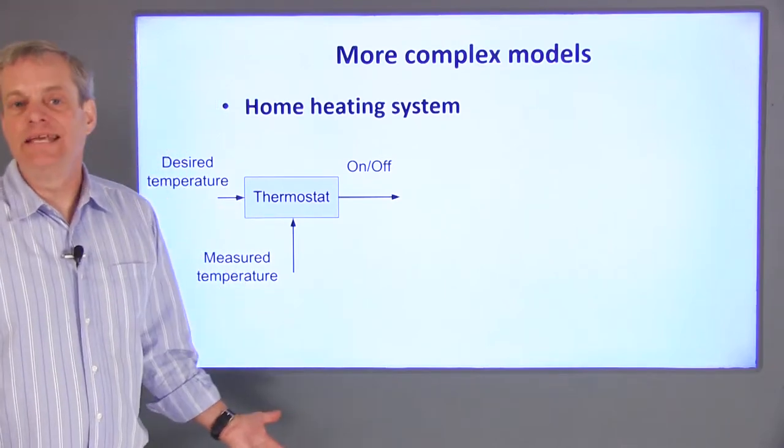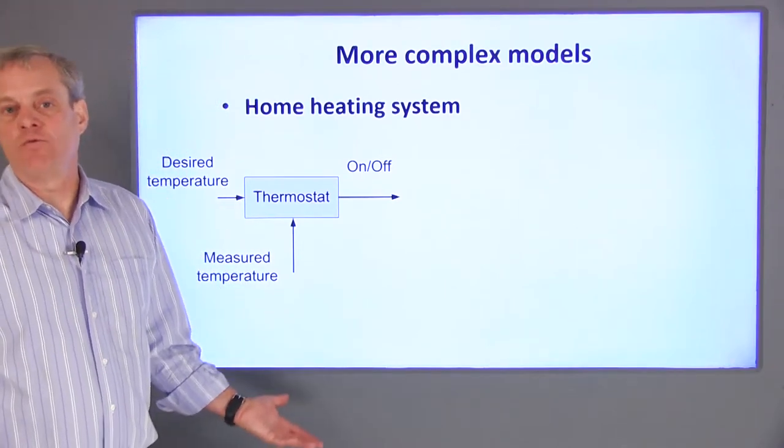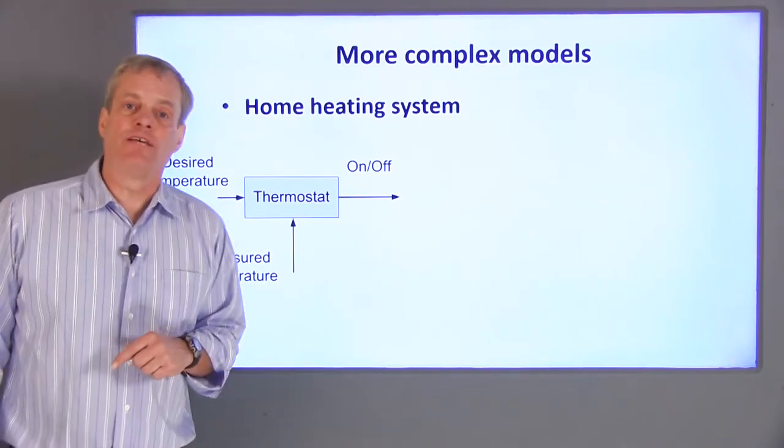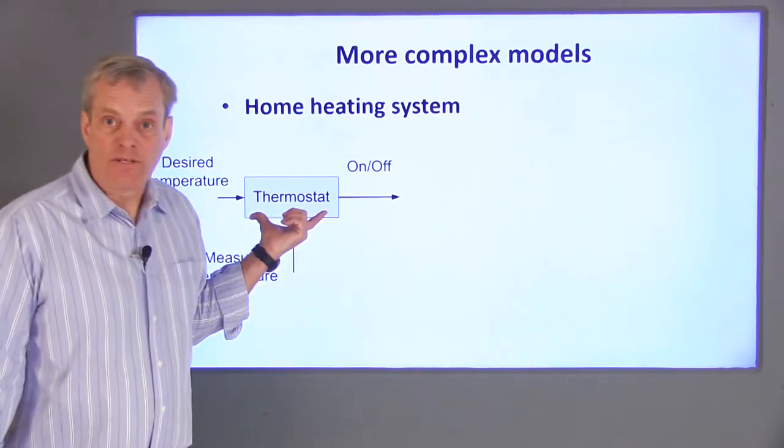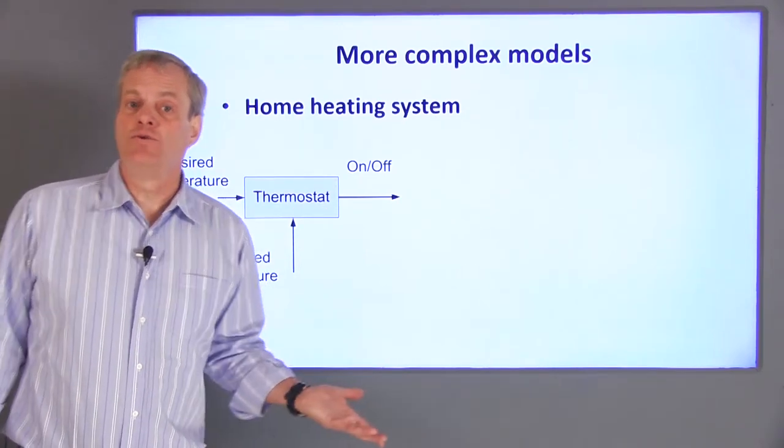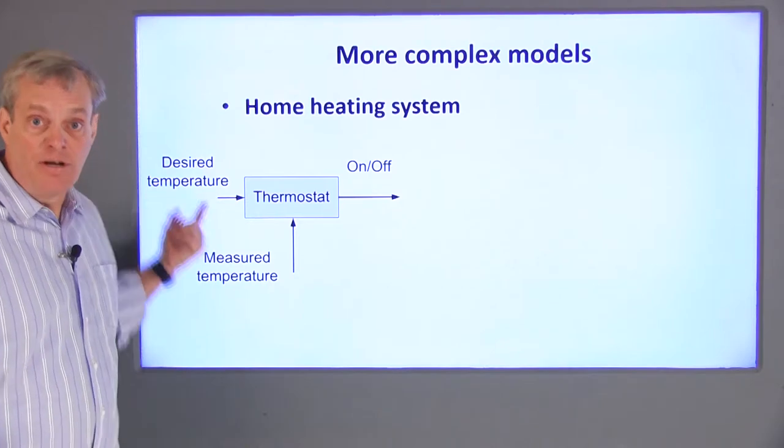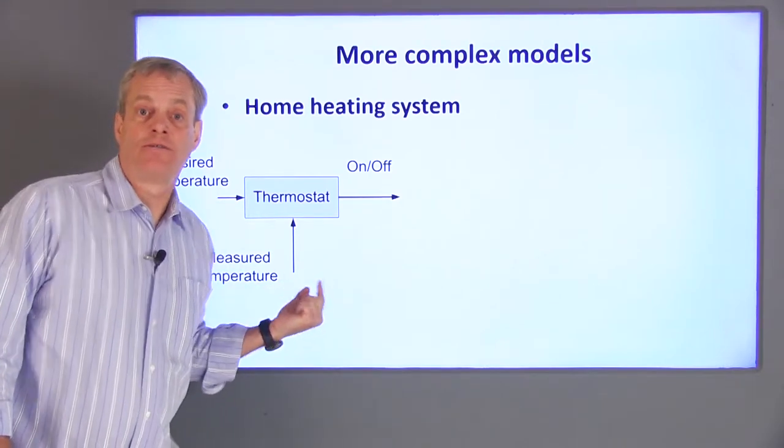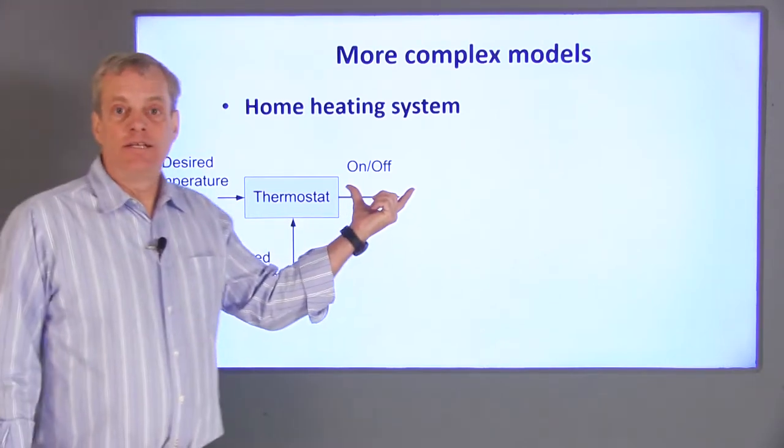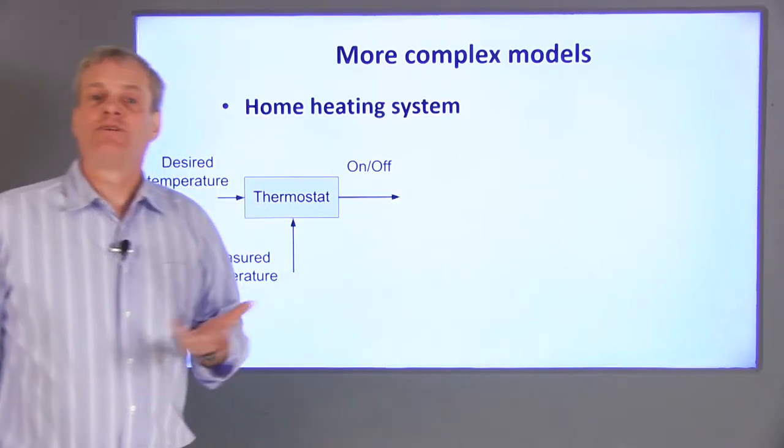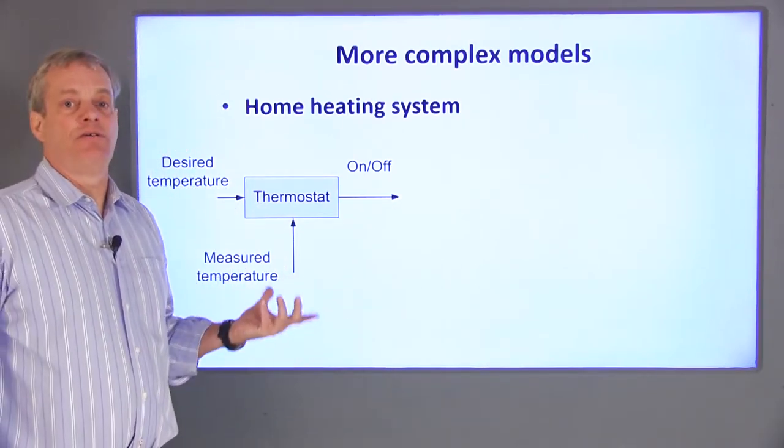A home heating system is an example of how this might work. Our typical interface with our heating system is the thermostat. The thermostat accepts two inputs, the desired temperature and the actual temperature in the house. The output's a decision whether to turn the furnace on or off. There are several design decisions here.